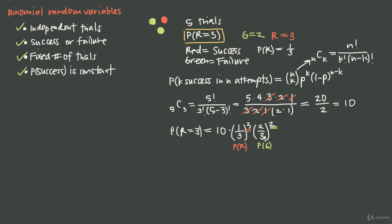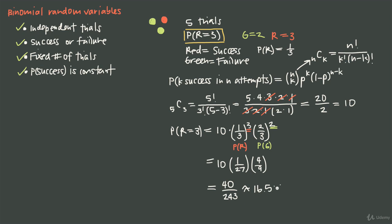That's what this formula means: success to the power of successes times failure to the power of failures, multiplied by the binomial coefficient. Doing the arithmetic: one-third cubed is 1/27, and two-thirds squared is 4/9. Multiplying across: 10 times 1 times 4 equals 40 in the numerator, and 27 times 9 equals 243 in the denominator. So the probability is 40/243, approximately 16.5% — there's about a 16.5% chance of pulling the red marble exactly three times in five trials.